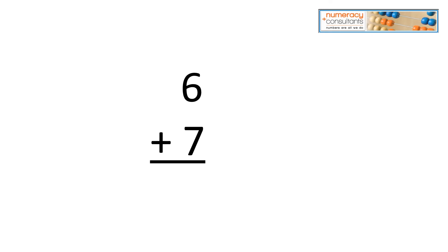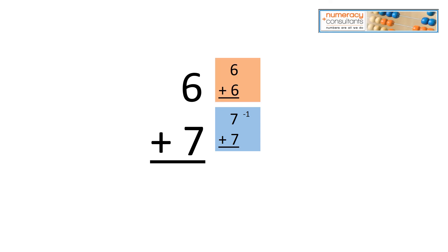Six plus seven — decide what double you would use. If we use seven plus seven, we're going to be over by one, so we'll subtract. If we use six plus six, we're going to be under by one, so we will add. Whether you use seven plus seven minus one or six plus six plus one, the actual answer is going to be 13.